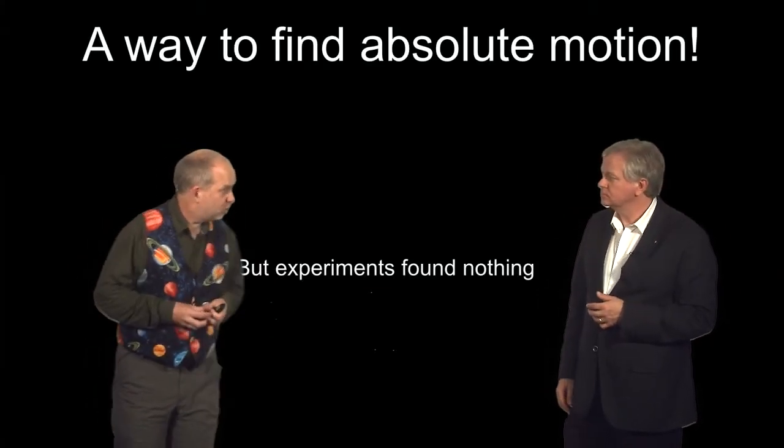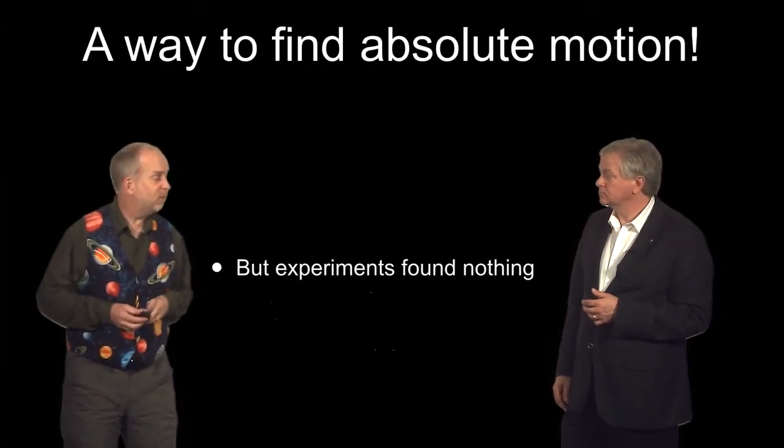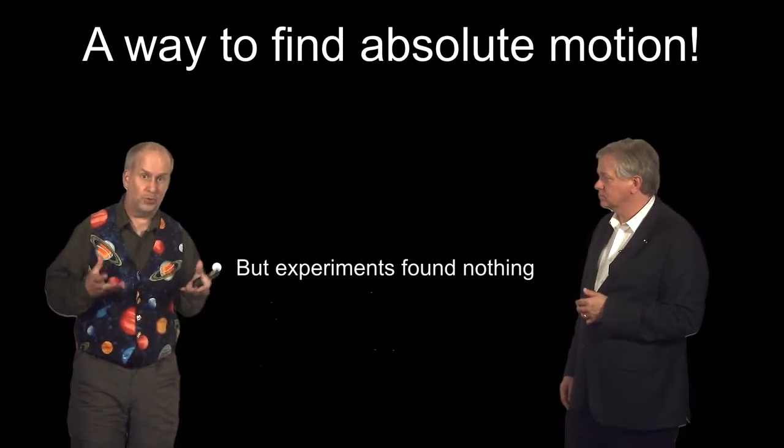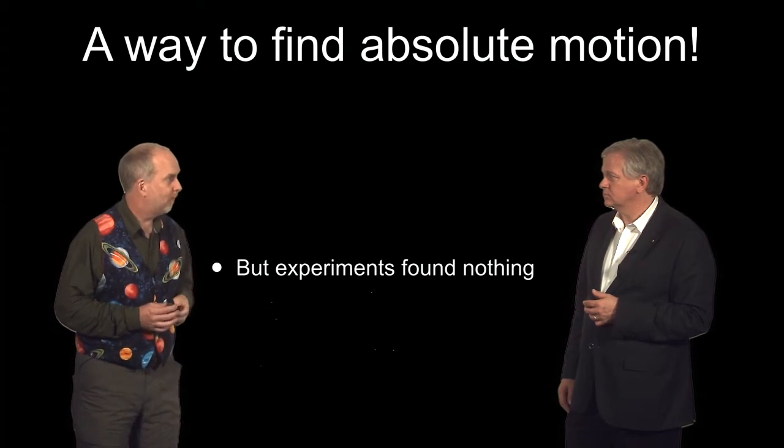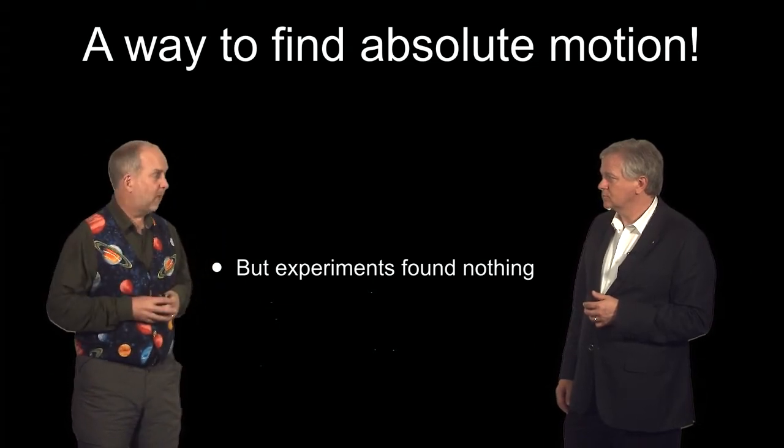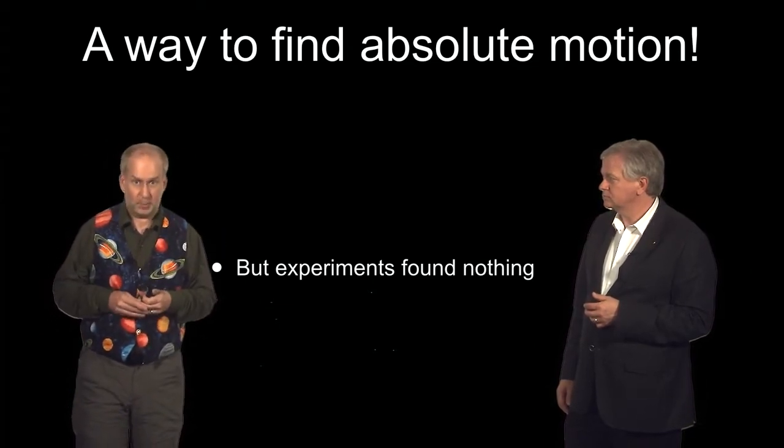By about the late 19th century, people had figured this paradox out, and experiments were done. The most famous, which is the Michelson and Morley experiment, to actually see if the speed of light was constant, even though the Earth was moving.